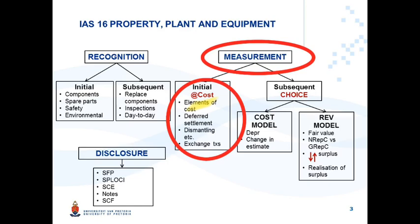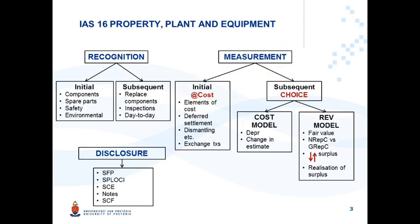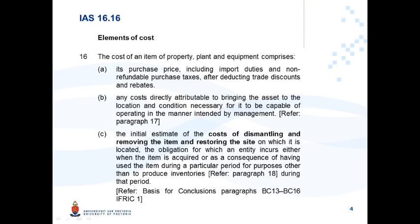This presentation focuses on dismantling, removing, and restoration costs. Paragraph 16 of IAS 16 highlights the elements of cost. Paragraphs (a) and (b) have been discussed in a previous presentation. This presentation focuses on paragraph (c): the cost of an item of PPE comprises the initial estimate of the cost of dismantling and removing the item and restoring the site.